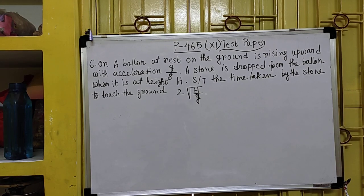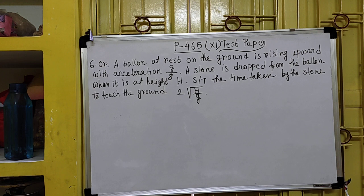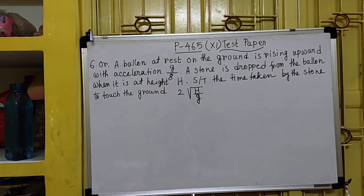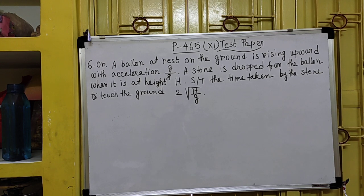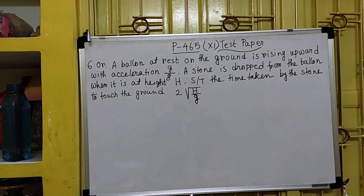A balloon is at rest on the ground and is rising upward with an acceleration g/h. A stone is dropped from the balloon when it is at a height H. We need to show that the time taken by the stone to touch the ground is 2√(H/g).